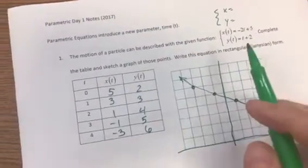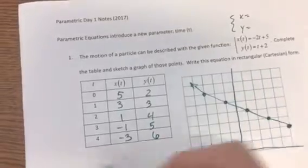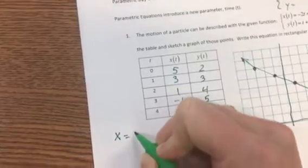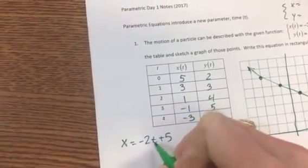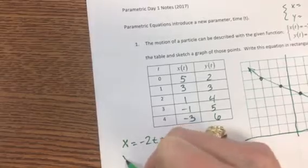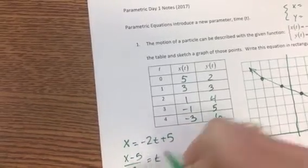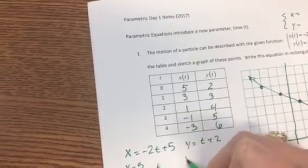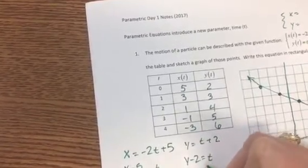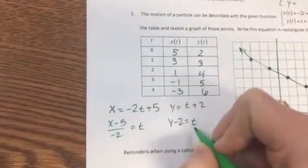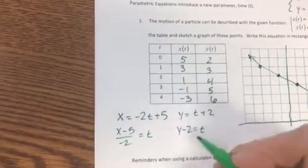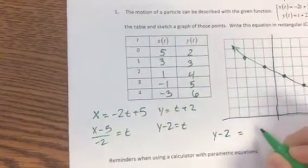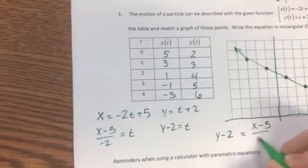So what I would do here is I'd say, well, x is equal to negative 2t plus 5. That implies if I subtract 5 and divide by negative 2, that's my t value. And then we have y is equal to t plus 2, therefore subtract 2, t is equal to y minus 2. I can set, these are the same t, that's the same time, I can set those equal to each other. And I have y minus 2 is equal to (x minus 5) over negative 2.